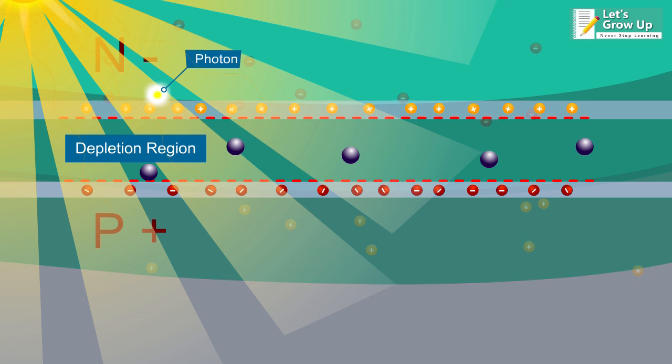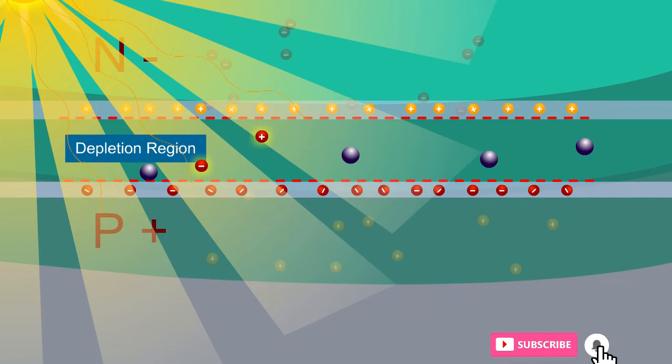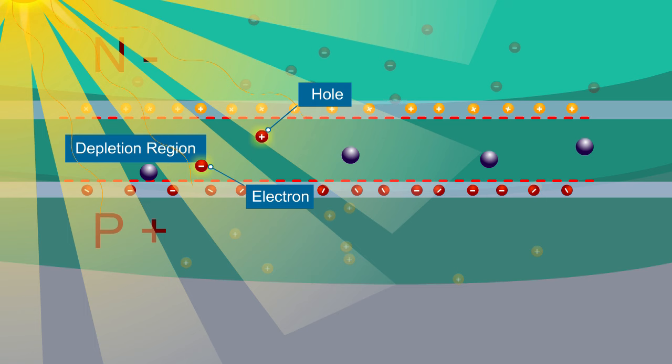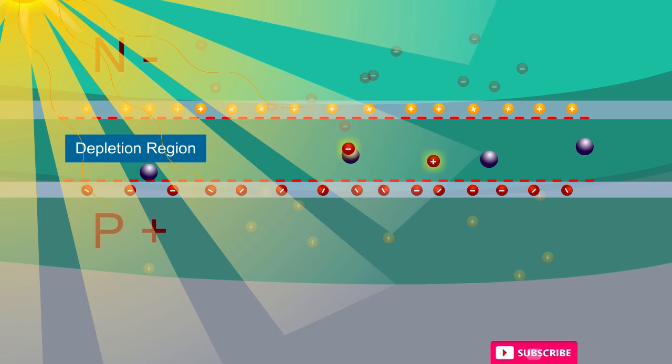This knocks the electrons from the neutral atoms leaving behind the holes and producing free charge carriers. Then the electrons move towards the n-type layer and the holes move towards the p-type layer due to the electric field present in the depletion region.